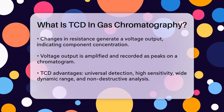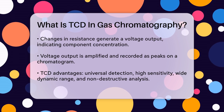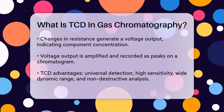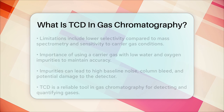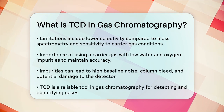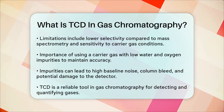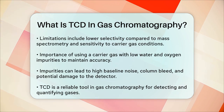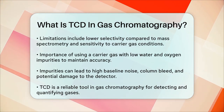However, the TCD also has some limitations. It's not as selective as other detectors, like mass spectrometry, so it might not be able to tell apart components with similar thermal conductivities. Additionally, changes in the carrier gas flow rate, pressure, or composition can affect the TCD's accuracy.